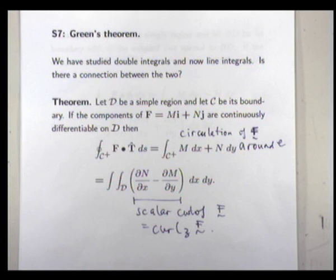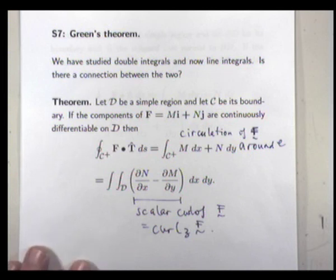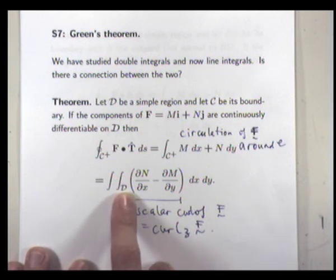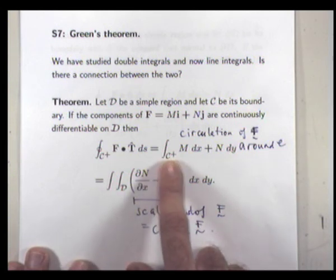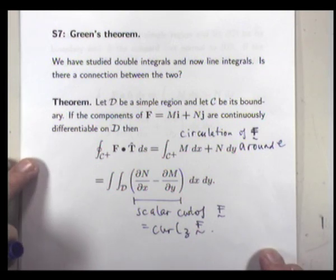We both know that curl and circulation have to do with swirling and rotations. Green's theorem gives yet another link between circulation and curl. This is known as one of the fundamental theorems of vector calculus because here we have two integral signs integrating over some two-dimensional region, and here we only have one integral sign integrating over the boundary.